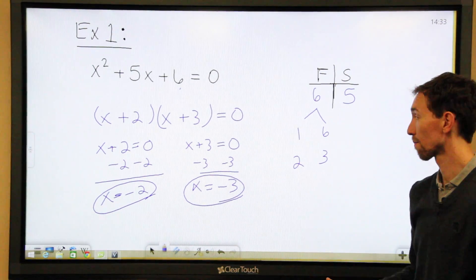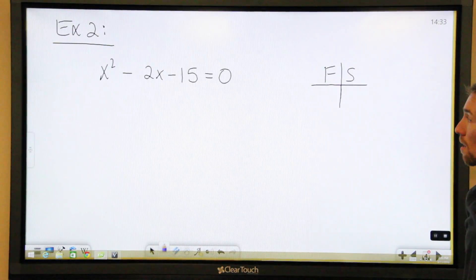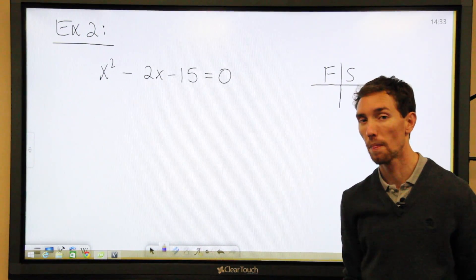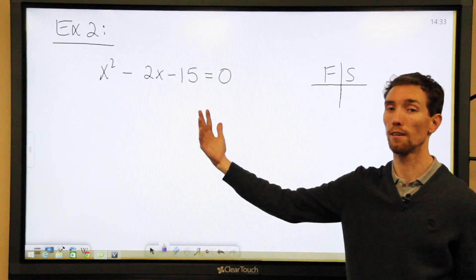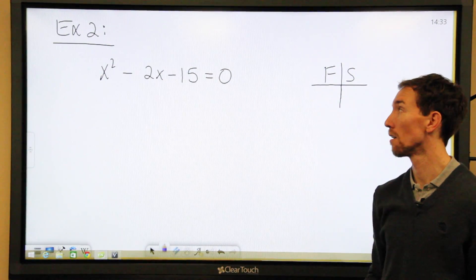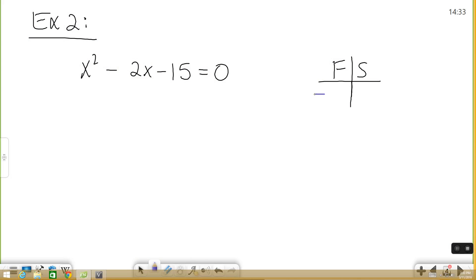Let's try another one. x² - 2x - 15 = 0. So again, our first coefficient, the number in front of x squared, is 1, which means we can try our factor sum method. We need two factors of negative 15 that will add up to negative 2. The signs are important because they change the numbers we can use.